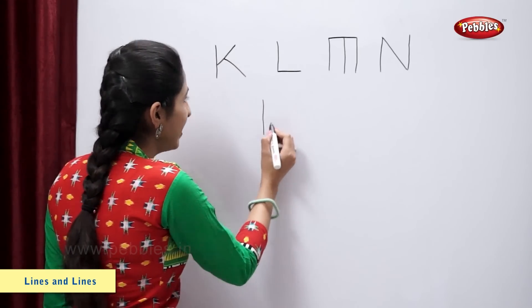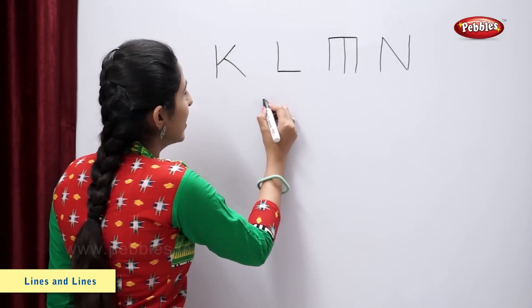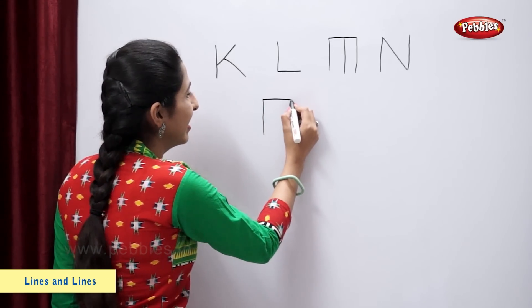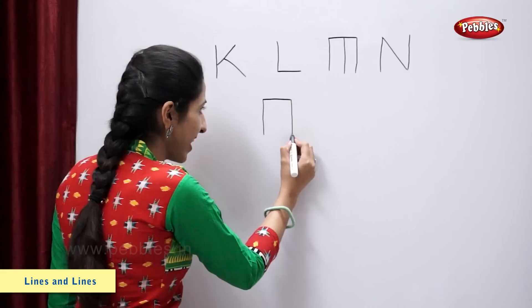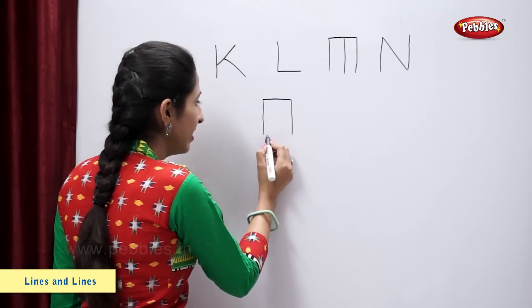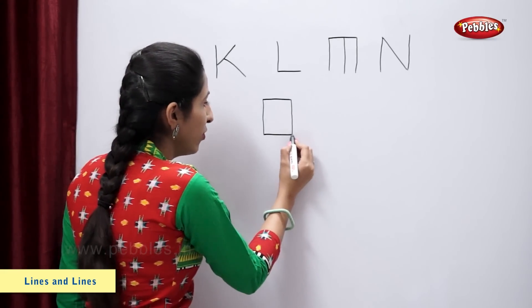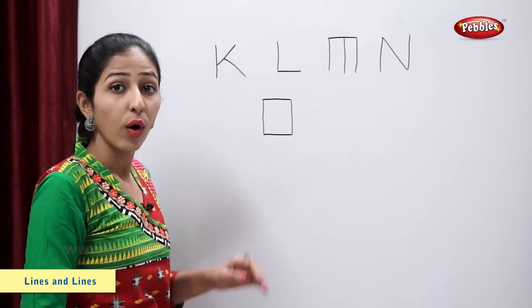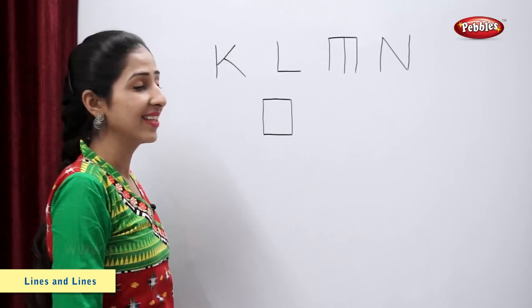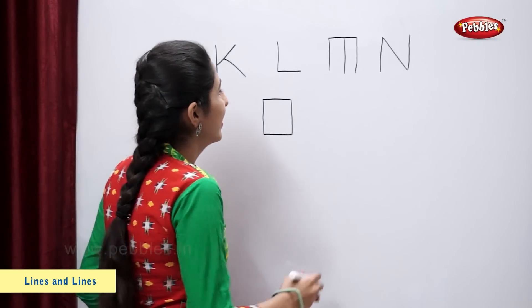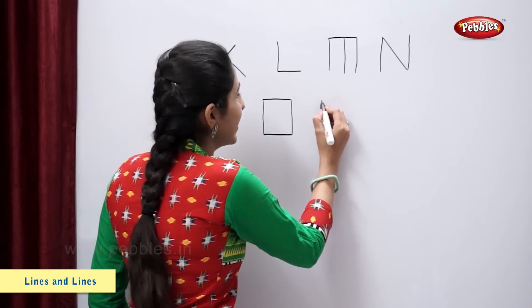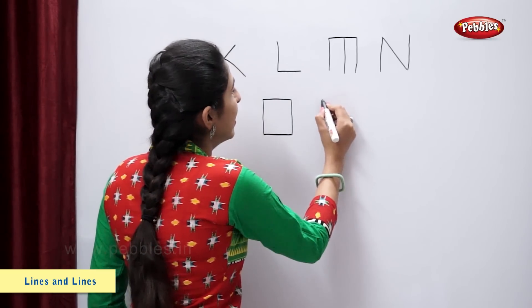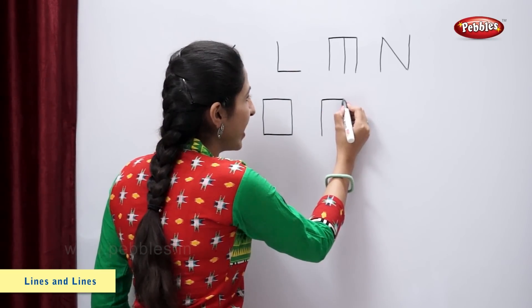Standing line, a slanting line. Standing line, one more slanting line — letter O. Standing line, sleeping line.